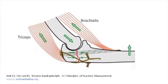Tension band constructs convert tensile forces into compression at opposite cortices of a fracture, and were described as a treatment method for olecranon fractures in 1963 by Weber and Vasey. The technique remains a popular surgical choice today.